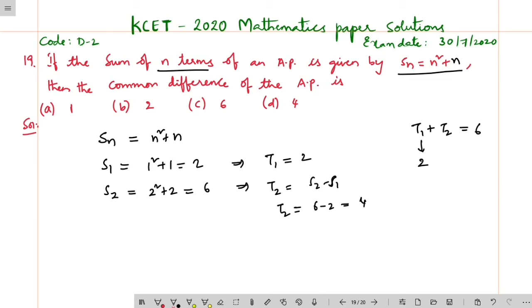So t1 equals 2 and t2 equals 4. What is the common difference? Common difference is t2 minus t1, so this is 4 minus 2, which is 2. The common difference is 2, option b.